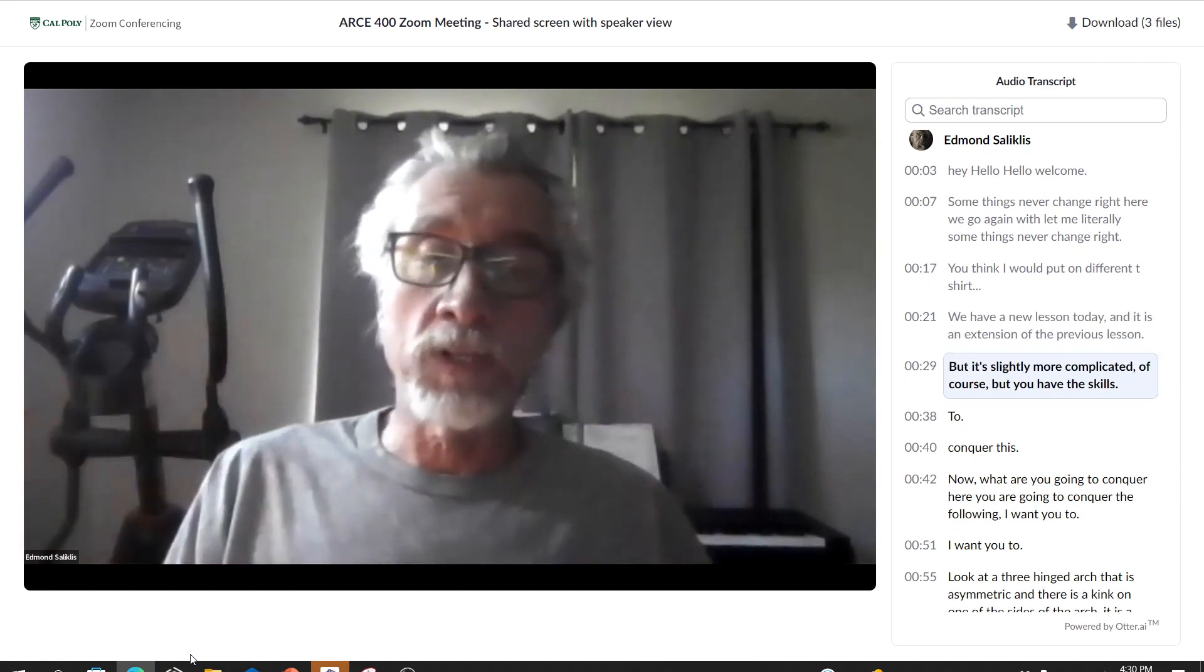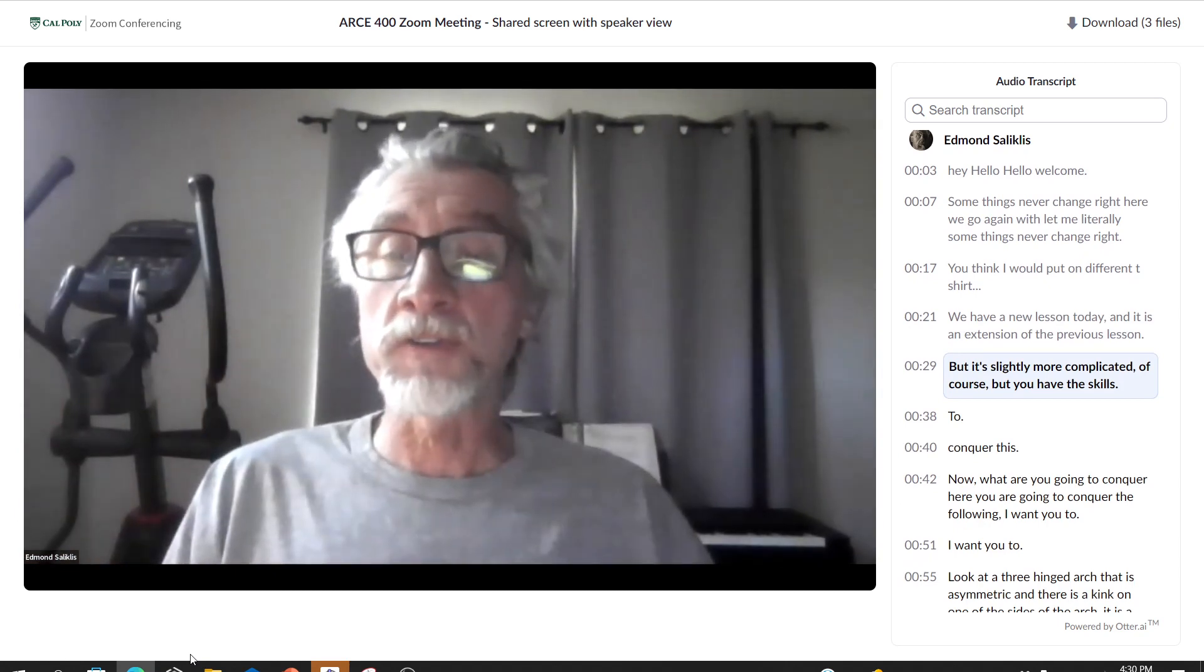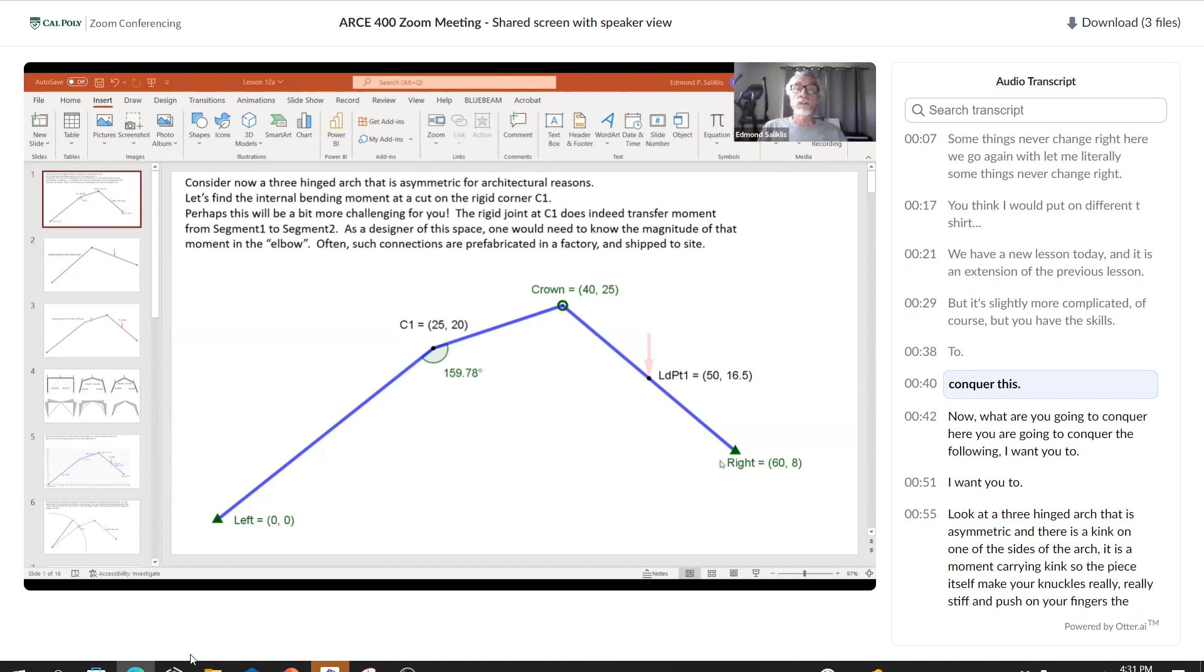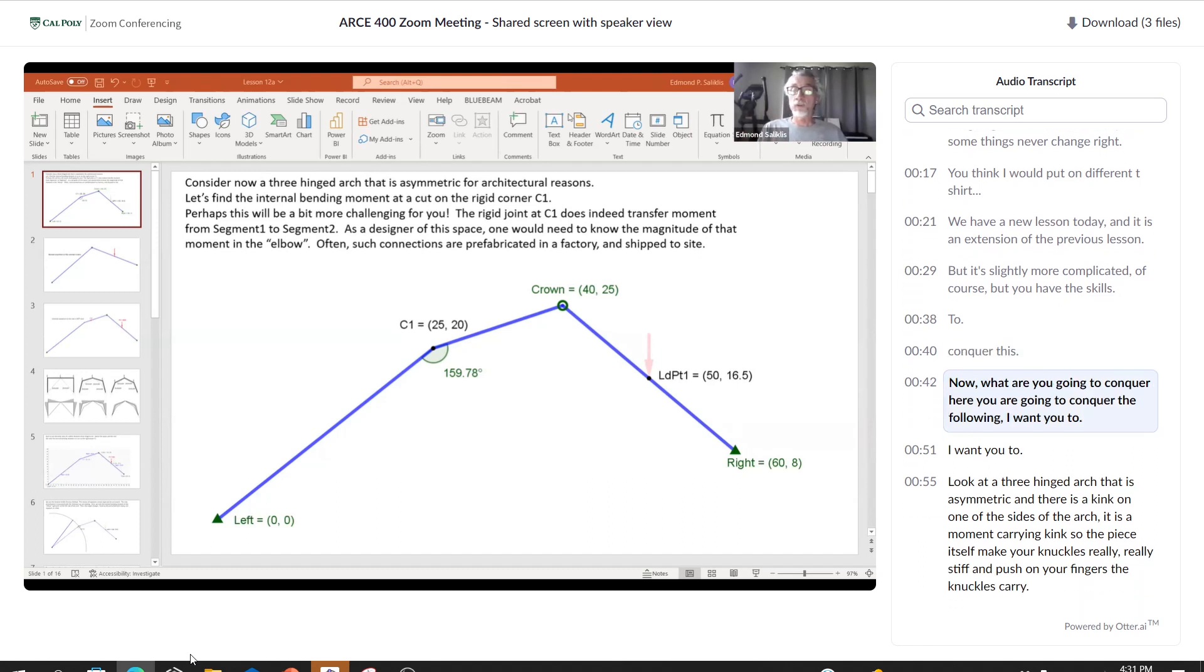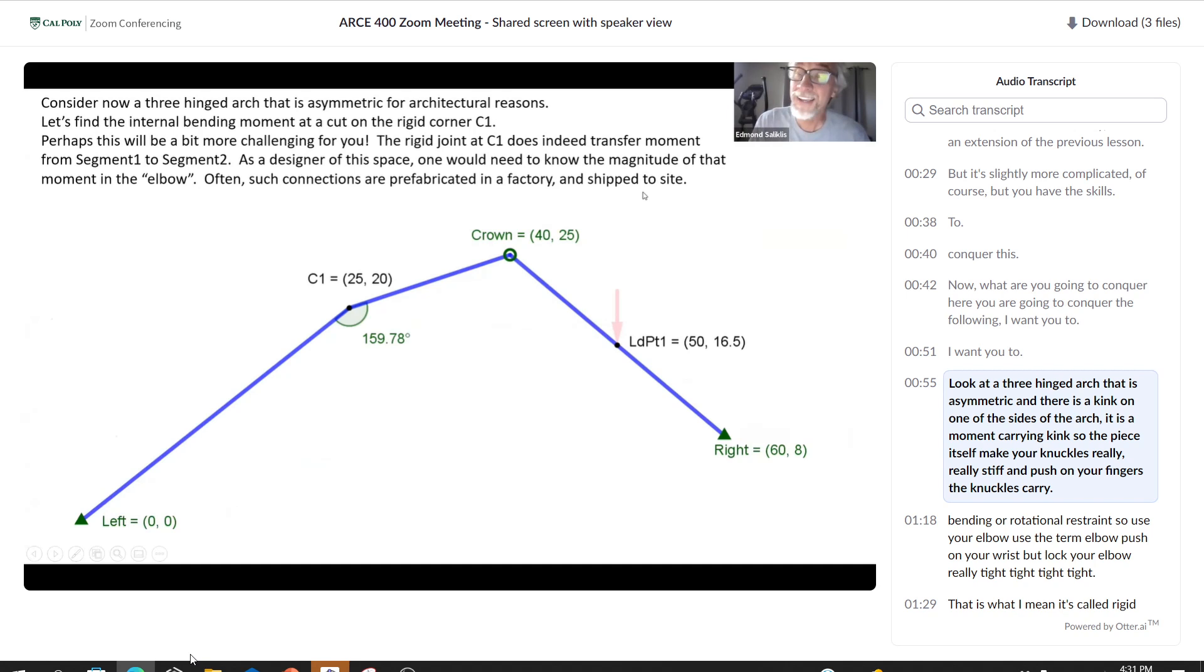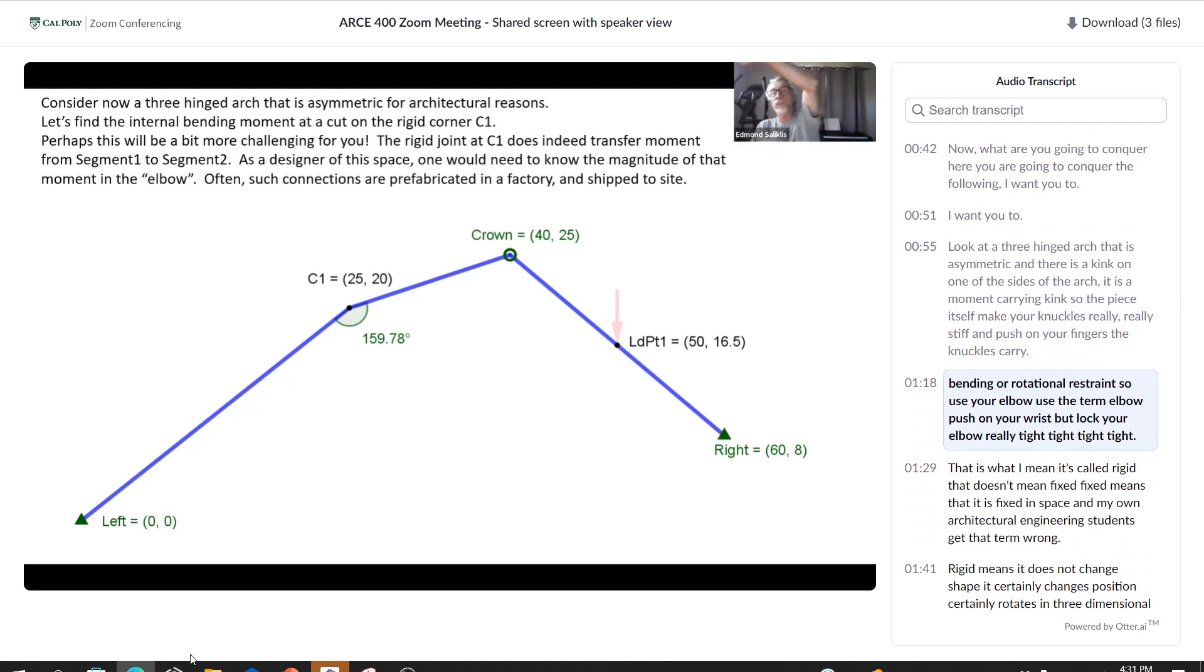It's slightly more complicated of course, but you have the skills to conquer this now. You are going to look at a three-hinged arch that is asymmetric and there is a kink on one of the sides of the arch. It is a moment carrying kink, so the piece itself makes your knuckles really stiff.